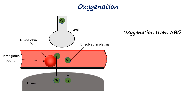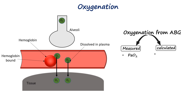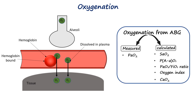The oxygenation parameters that can be obtained from an arterial blood gas analysis include directly measured values like the partial pressure of oxygen, as well as calculated indices such as oxygen saturation, alveolar-arterial oxygen gradient, PF ratio, the oxygenation index, and arterial oxygen content. Let's look at these parameters one by one.